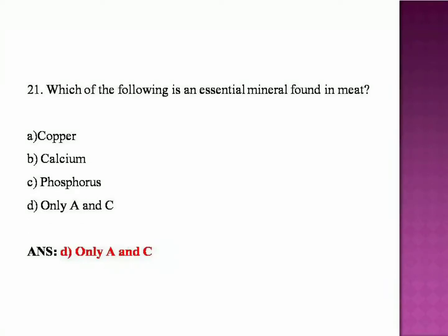Which of the following is an essential mineral found in meat? Copper, Calcium, Phosphorus, or Only A and C? The answer is Only A and C — that is, Copper and Phosphorus.